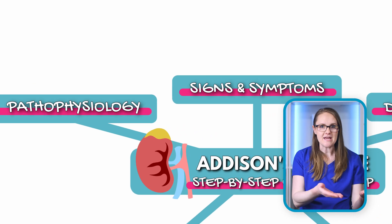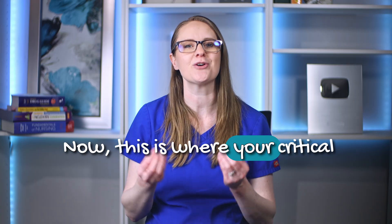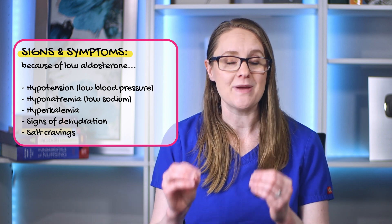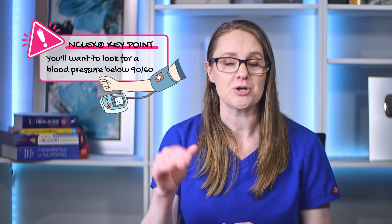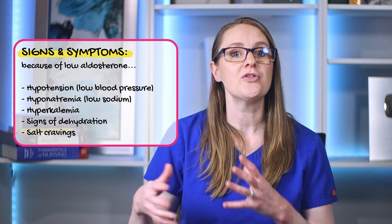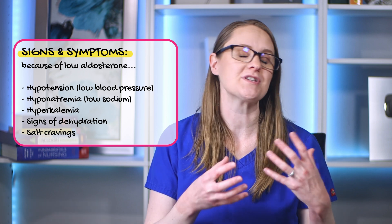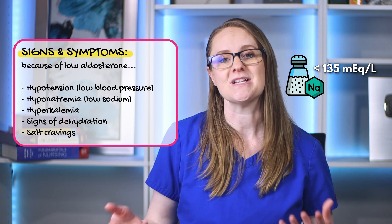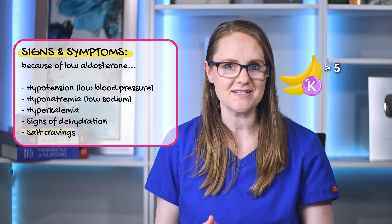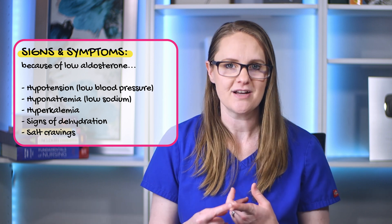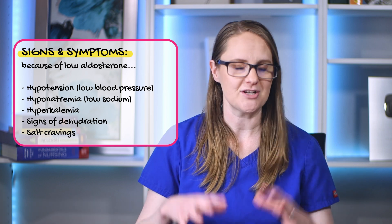Now, what might the signs and symptoms be for a patient with Addison's disease? Every symptom leads back to one of those three key hormones. Because of low aldosterone, patients can present with hypotension — blood pressure below 90 over 60 — and possibly orthostatic hypotension, meaning they get dizzy when they stand up. You could also see hyponatremia with sodium less than 135 mEq/L, hyperkalemia with potassium more than 5 mEq/L, signs of dehydration, and salt cravings.